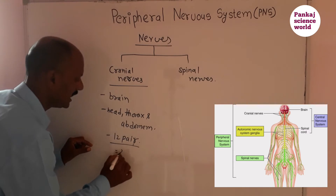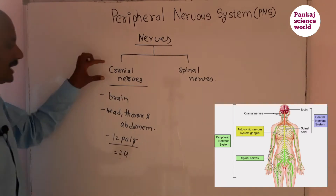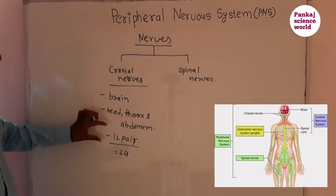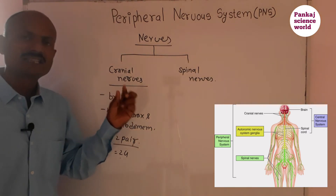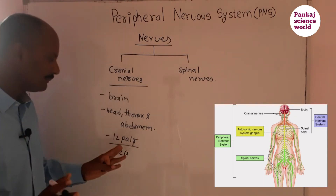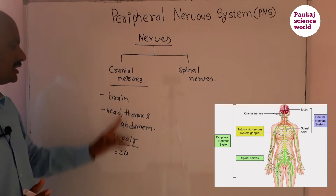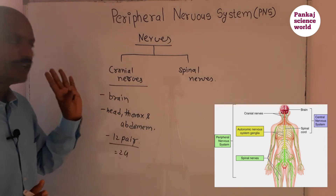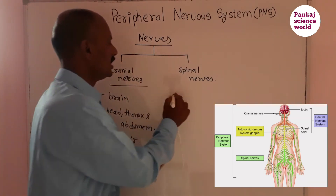In total there are 24 cranial nerves. The nerves that arise from the spinal cord are called spinal nerves.